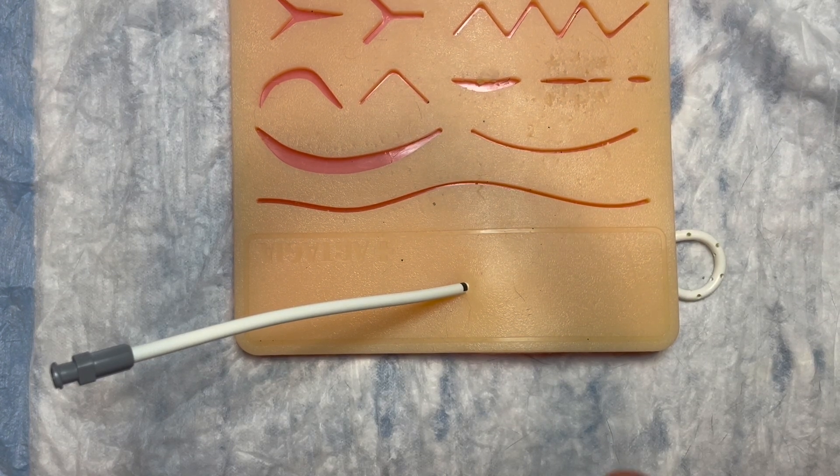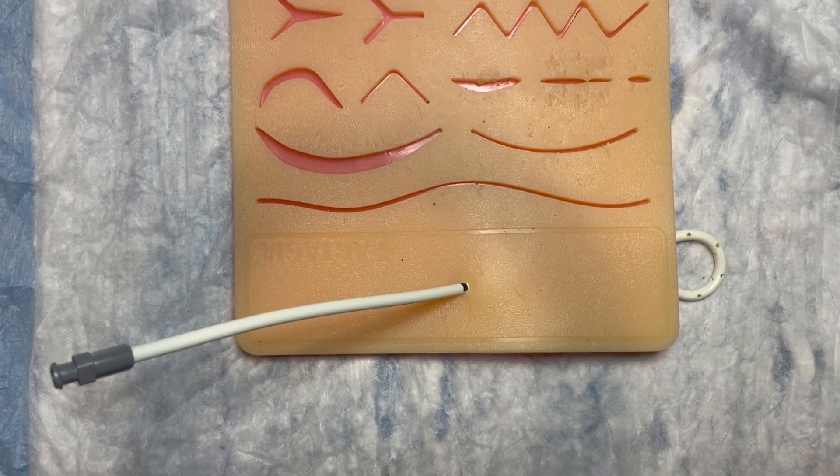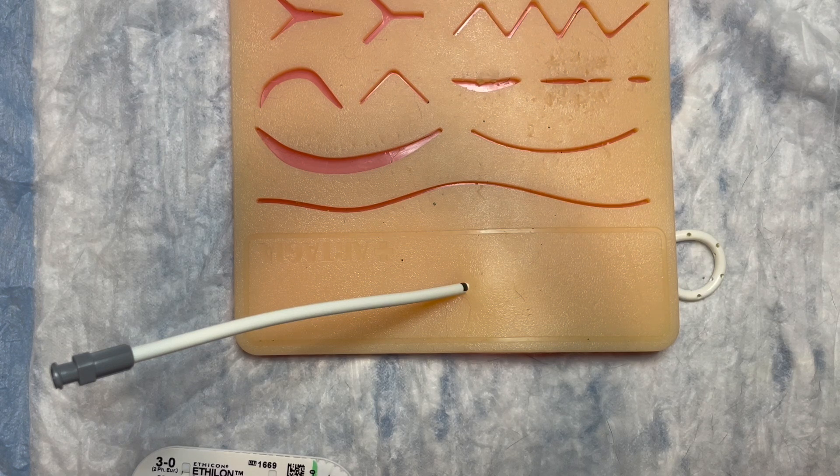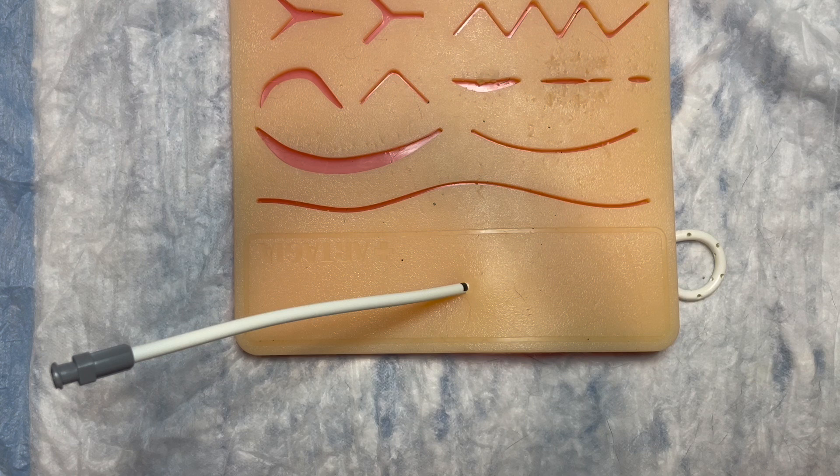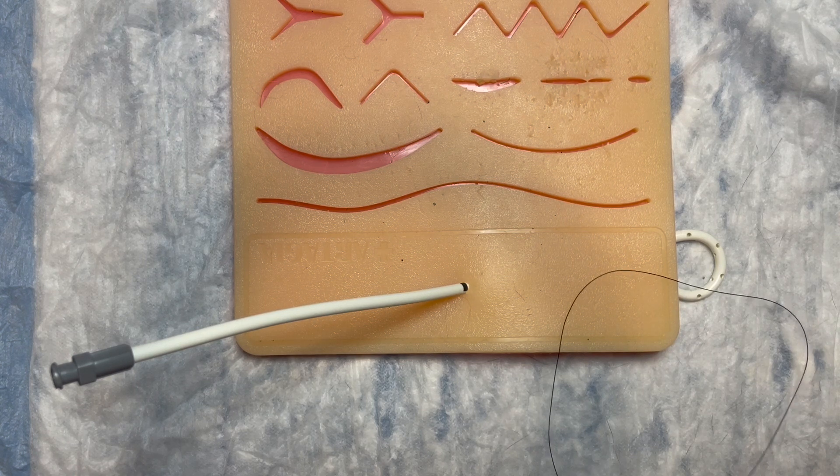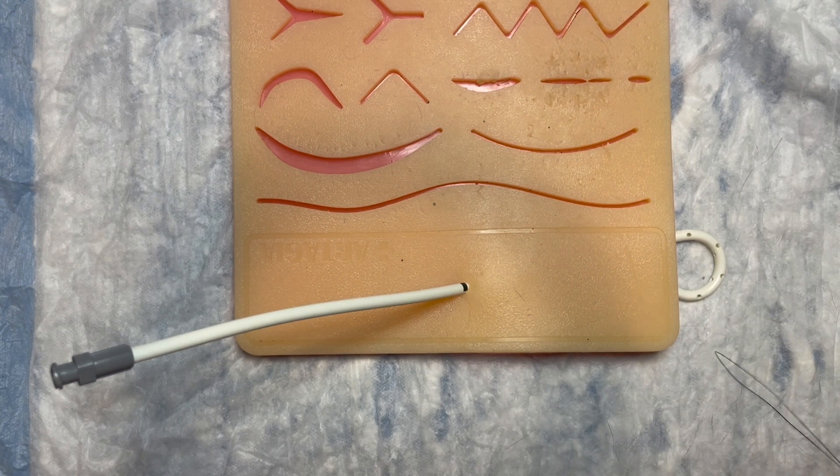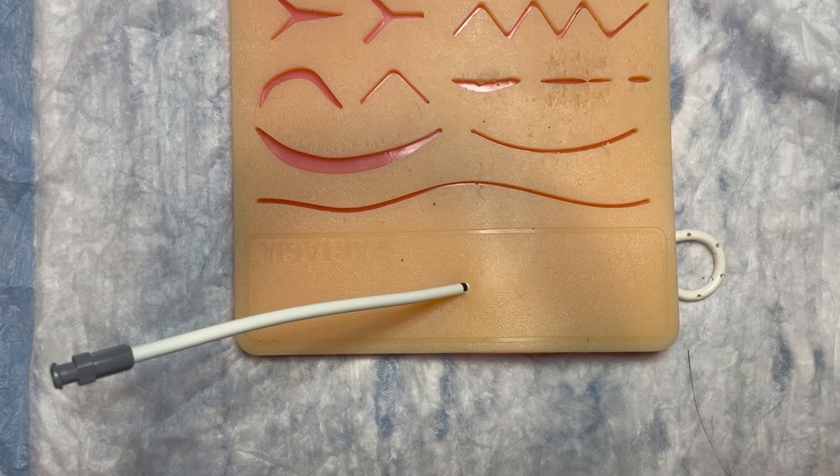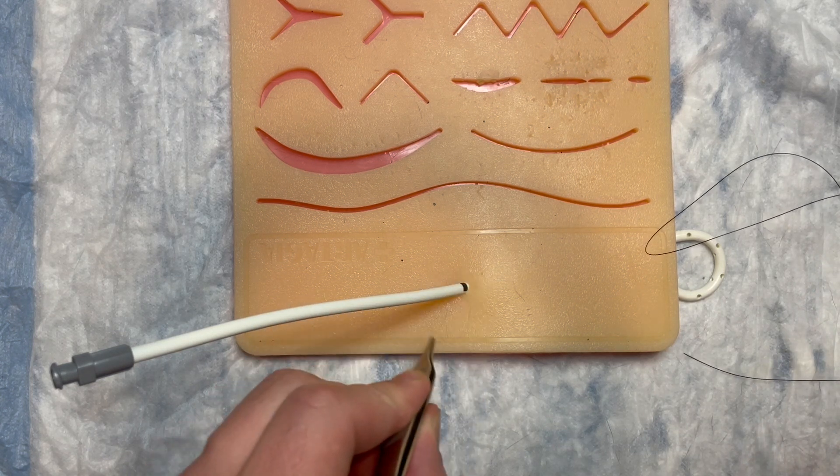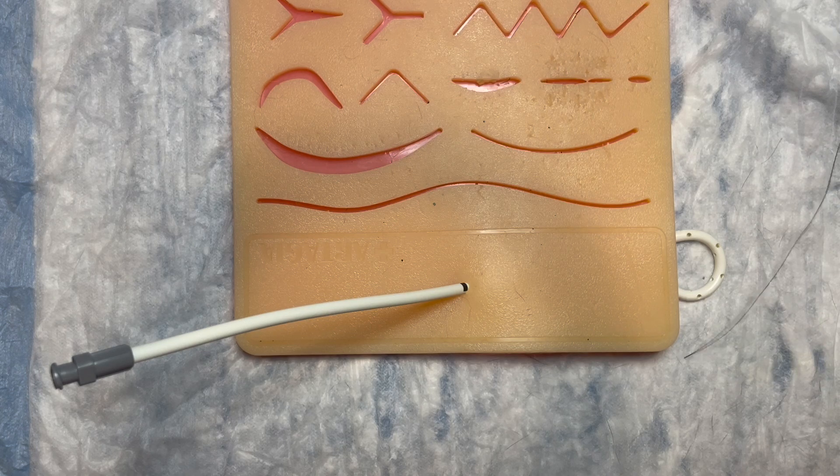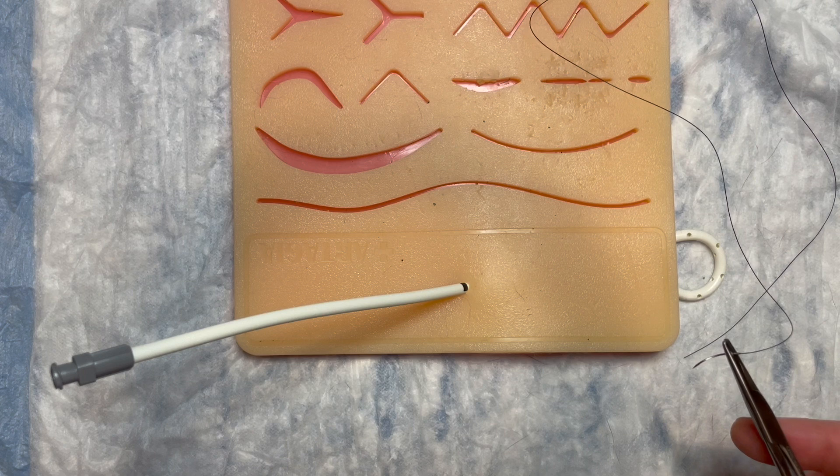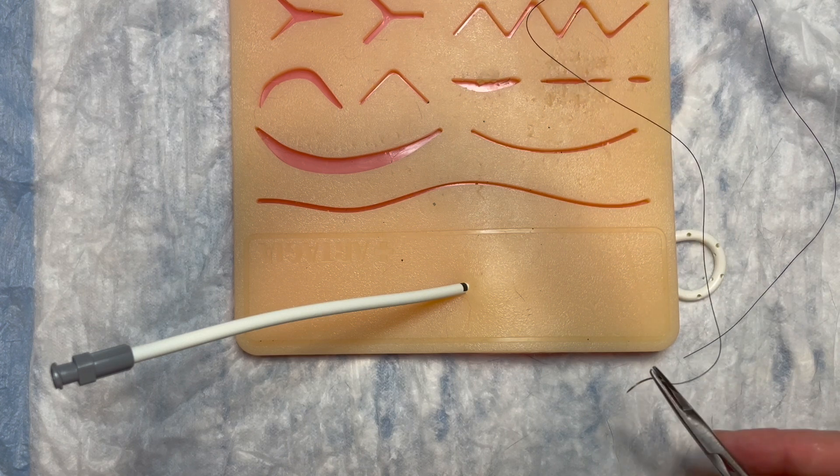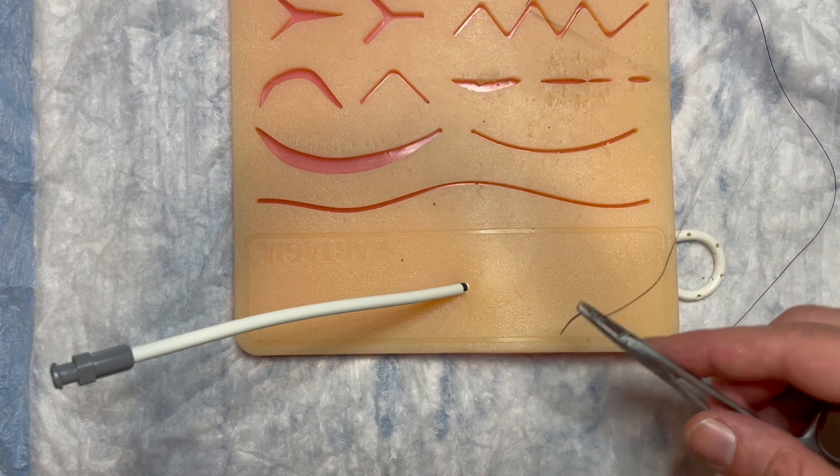Okay, so I've got my pigtail catheter in place, I've got some suture here, and we are going to secure this pigtail to the skin, make sure it does not come out. So the first thing I want to do, I want to make sure I anesthetize a really big wheel around the pigtail to begin with, so therefore when I put this stitch in it's not going to cause the patient any pain.